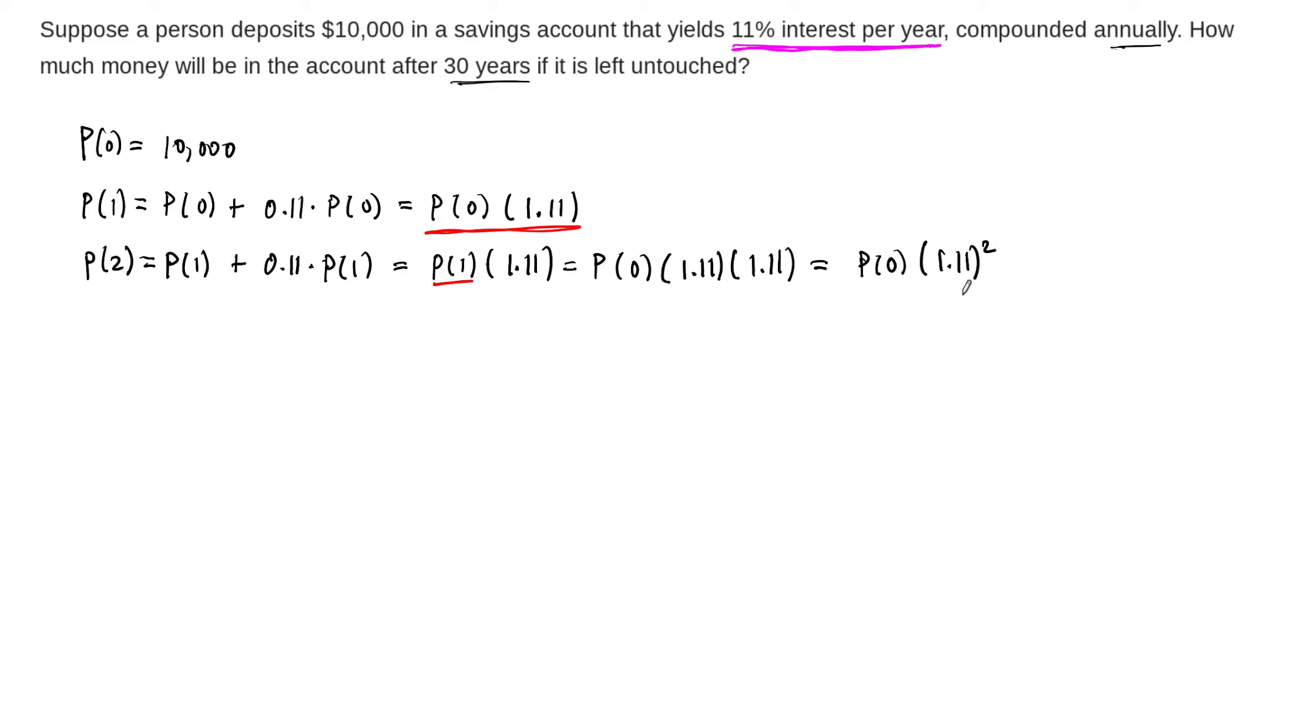And so we can probably see where this is going, but let's write down one more. So P(3), after 3 years, how much money are we going to have? Well, we're going to have the previous year, P(2), plus the interest that we accrue. And we know how this is going now, so 0.11 times P(2). Again, we can factor this out, P(2) times 1.11. So there's our amount that we have in year 3.